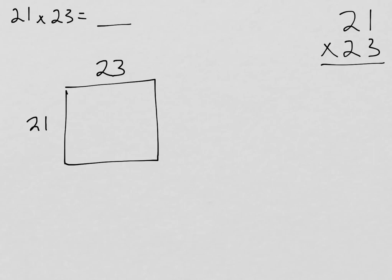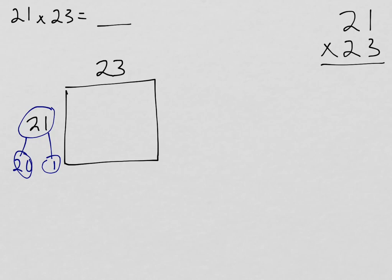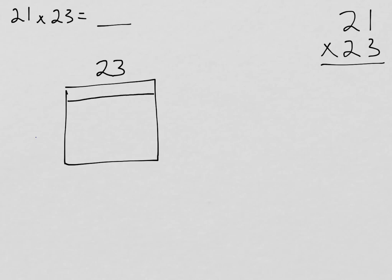Well, this number 21 can be thought of as 20 and 1. What if I split this rectangle in that way? So instead of that side being 21, what if I split it and make that section 1 and this section 20? Suddenly, we have two rectangles, and we are now looking at easier to solve problems. Because the top rectangle would be solved by 1 times 23, and this would be 20 times 23.